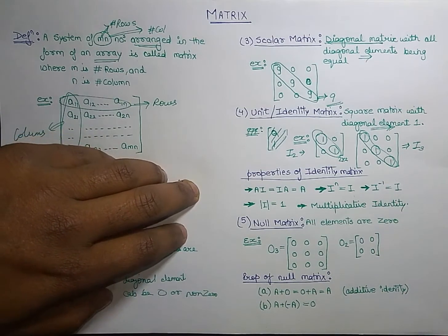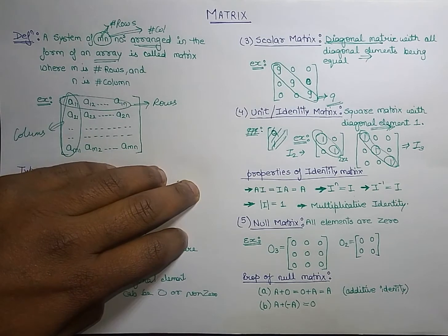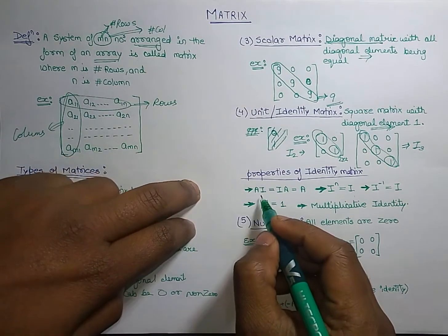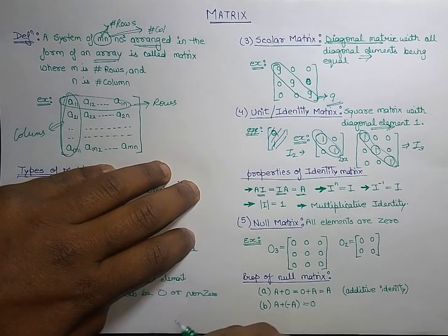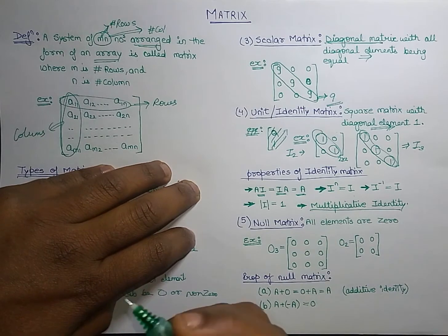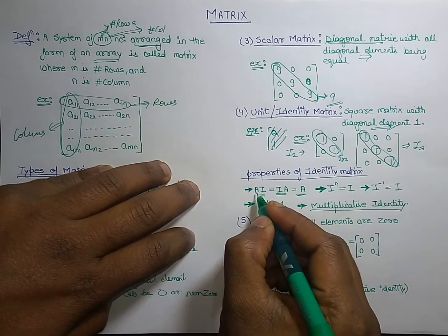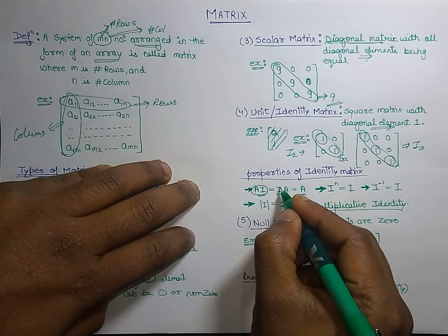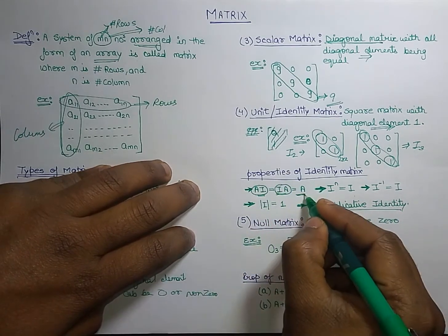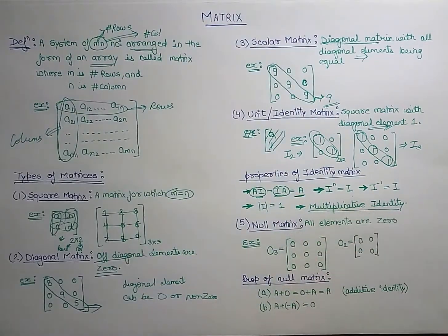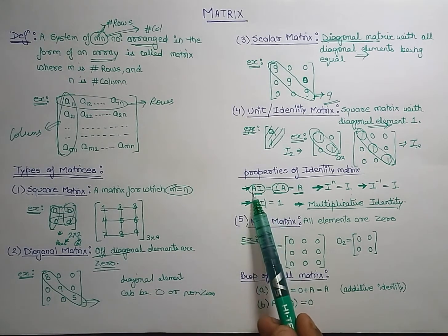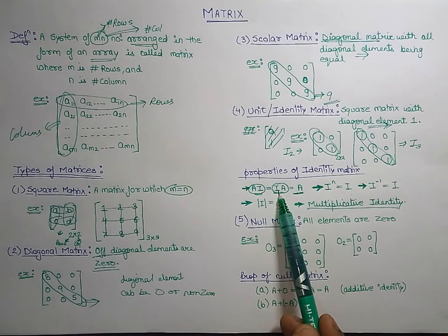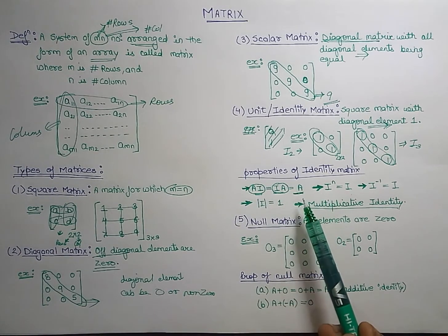There are a few properties of the identity matrix. The first property is that the identity matrix is a multiplicative identity. This means if we multiply it with matrix A — whether we place A first or I first — the output is the same matrix A. So A times I equals I times A equals A.